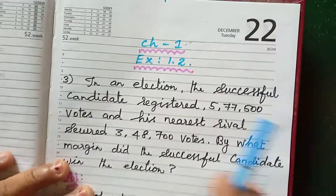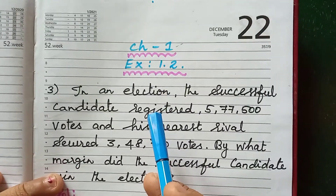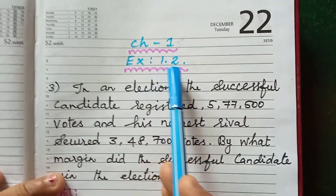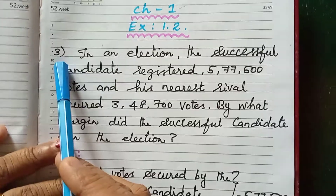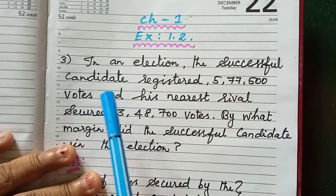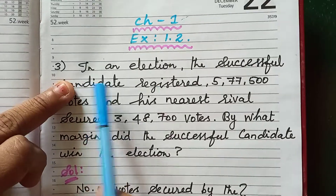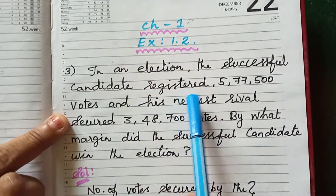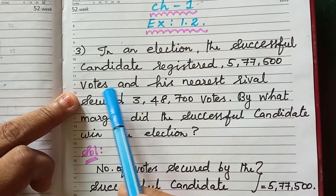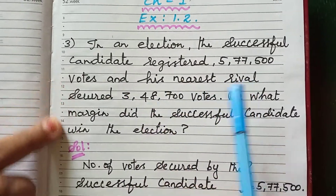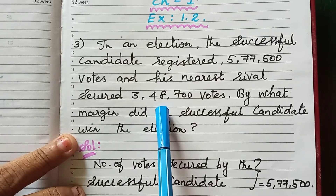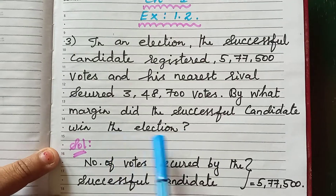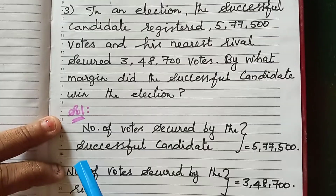Today we are going to see CBSE syllabus standard 6, chapter 1, knowing our numbers, exercise 1.2, this is the third question. The second question's link has been given in the description box. The question is: in an election, the successful candidate registered 5,77,500 votes and his nearest rival secured 3,48,700 votes. By what margin did the successful candidate win the election?